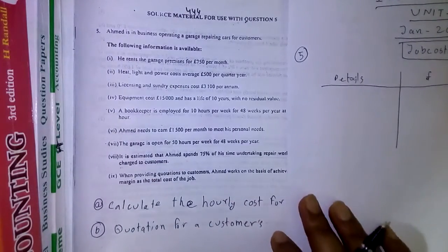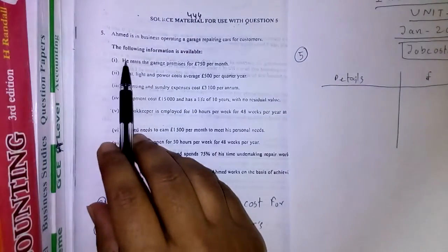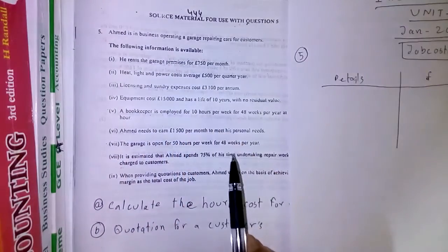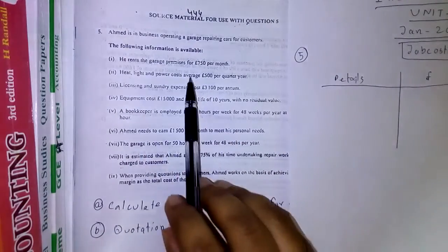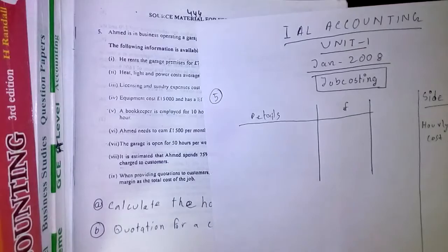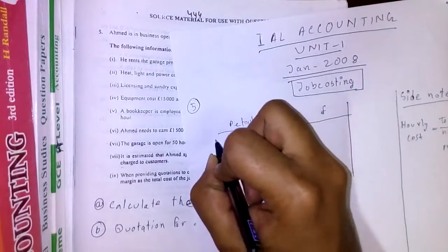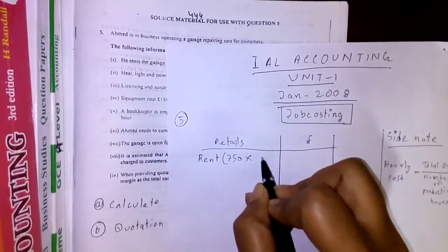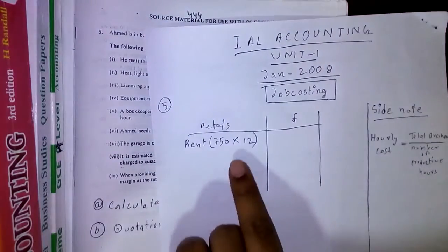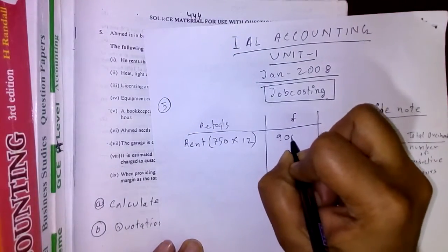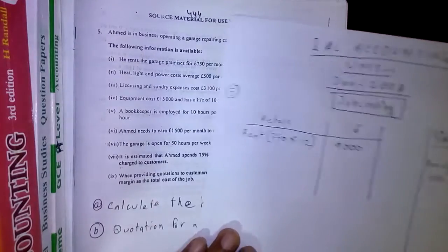The first major cost is rent. It says he rents the garage premises for £750 per month, and we need to find the hourly cost for the whole year. So rent for the whole year is 750 × 12, which gives us £9,000.